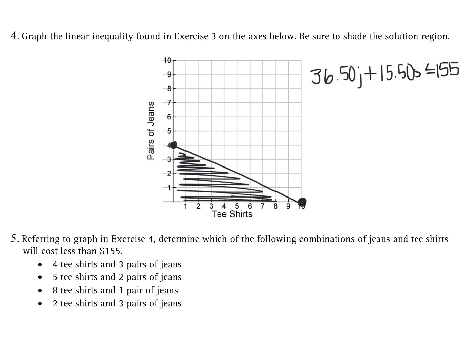The graph shows combinations of t-shirts and jeans that keep spending at or below $155. For example, four t-shirts and three pairs of jeans falls outside the shaded region — that exceeds $155. Five t-shirts and two pairs of jeans falls within the shaded region — affordable. Two t-shirts and three pairs of jeans is also within the region, but eight t-shirts and one pair of jeans is too much money.